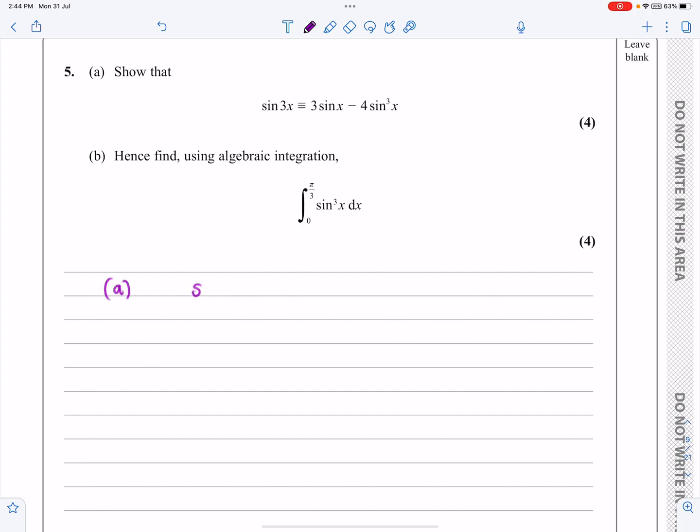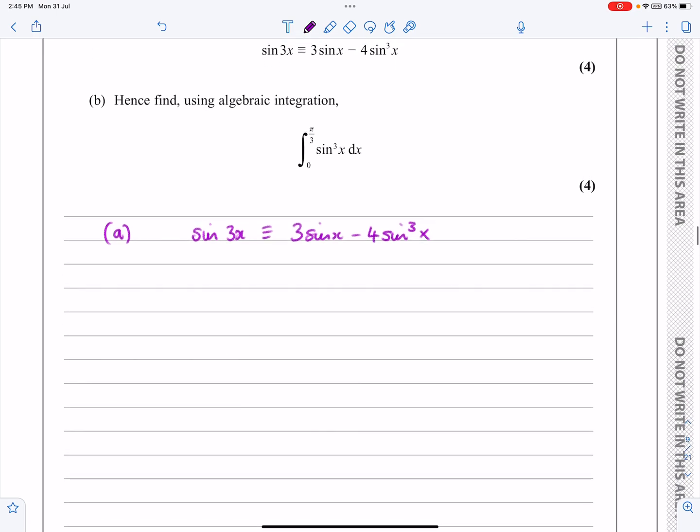It says sine 3x is identical to 3 sine x minus 4 sine cubed x. I would highly strongly recommend that you learn the proof for this. This is almost just a memory test for you of how we do this one. So what we do is we start off with the left hand side, we start off with sine 3x.